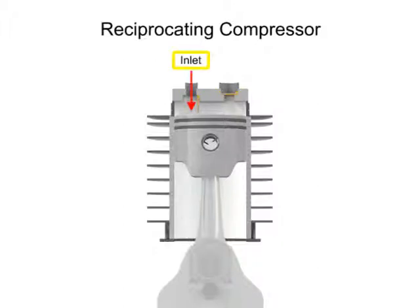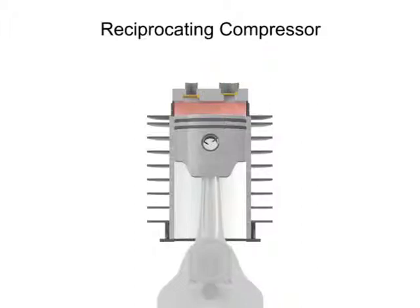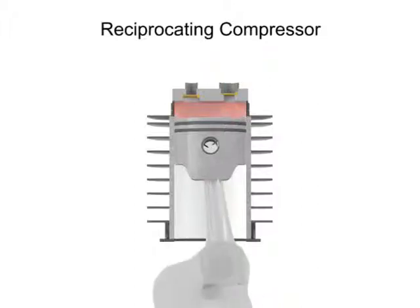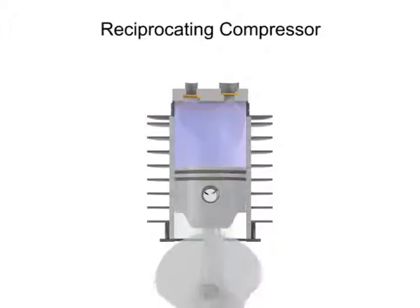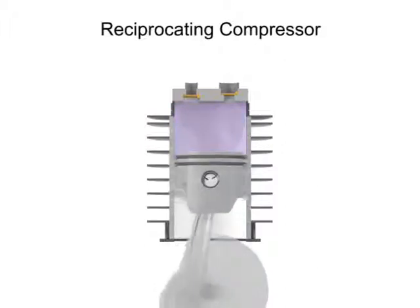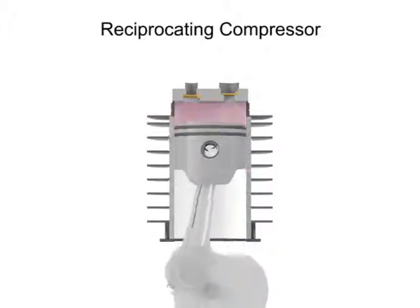The inlet, sometimes called the suction valve, allows atmospheric air to enter the cylinder. The outlet, sometimes called the discharge valve, ejects the newly compressed air from the cylinder. As the crankshaft turns, the piston lowers and raises, changing the available volume within the cylinder.